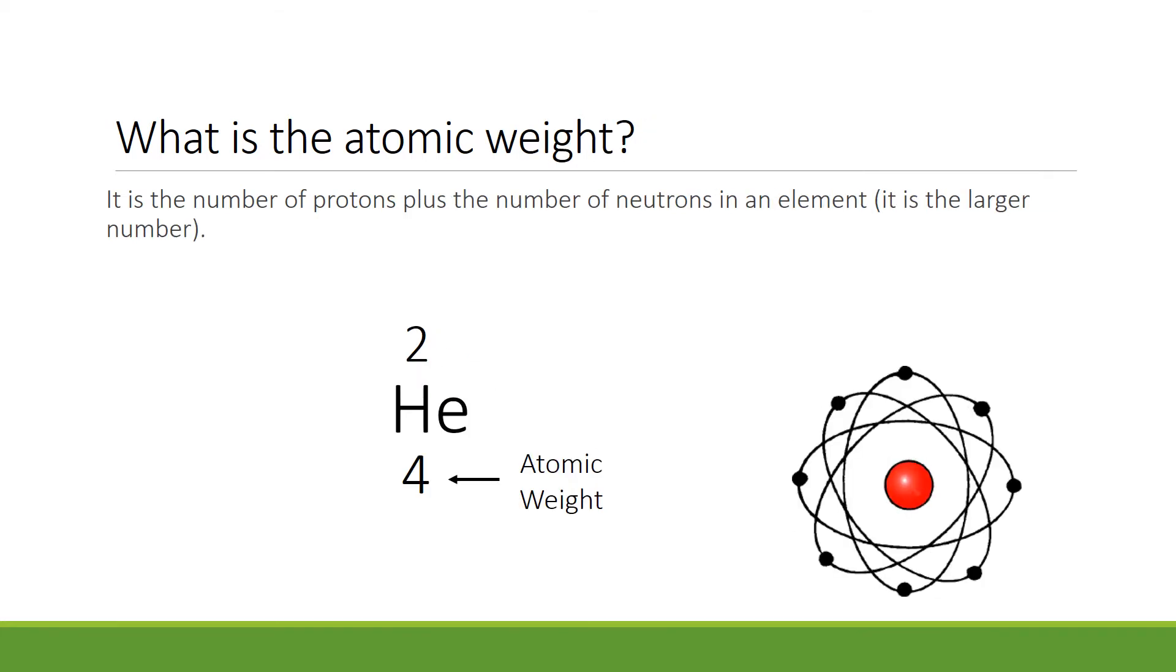Here again is the chemical symbol for helium. With it are two numbers, 2 and 4. Remember the smaller number is always the atomic number. And the larger number is always the atomic weight. So the atomic weight for helium is 4.